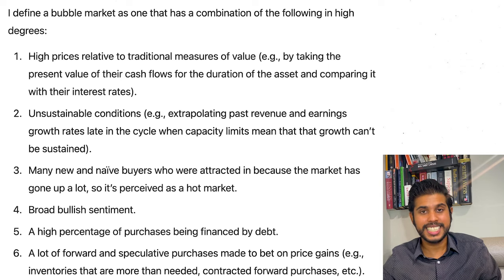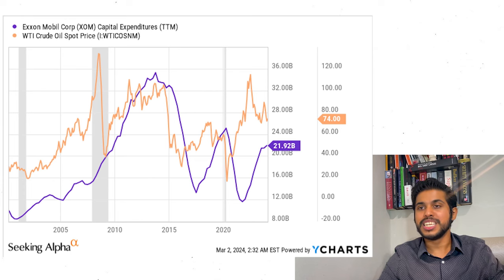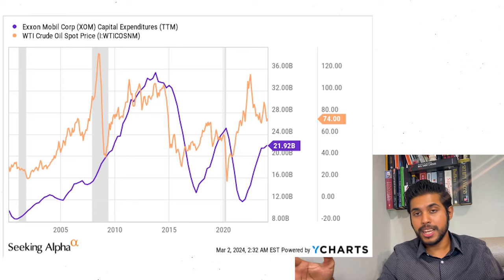Number six is a lot of forward and speculative purchases, and here it's more specific about companies increasing their capital expenditures. Usually this happens in commodity companies — when there is a bull market in, let's say, oil, everyone is going to invest in oil. Those companies increase capital expenditures, then there is an oversupply and the market crashes. According to Ray Dalio, if there is a combination of these six points, then probably we are in a bubble.